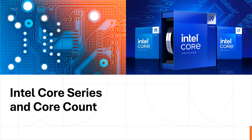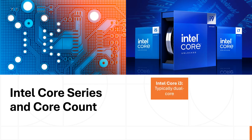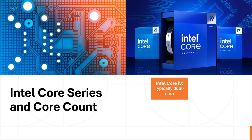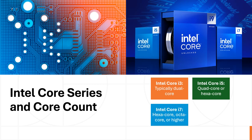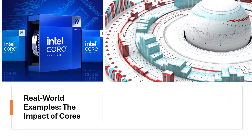Intel Core series and core count: Intel Core i3 is typically dual-core; Intel Core i5 is quad-core or hexa-core; Intel Core i7 is hexa-core, octa-core, or higher; and Intel Core i9 is high-end, often with 10 or more cores.